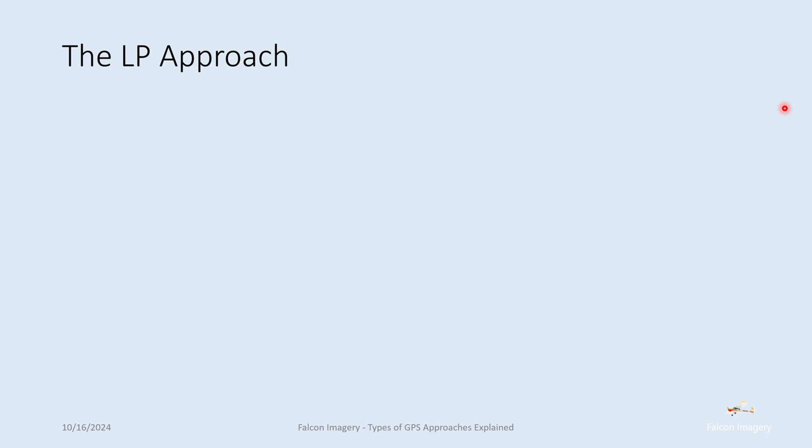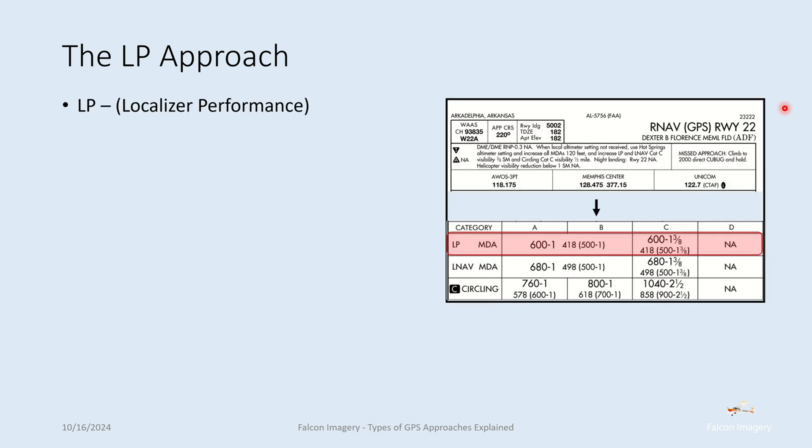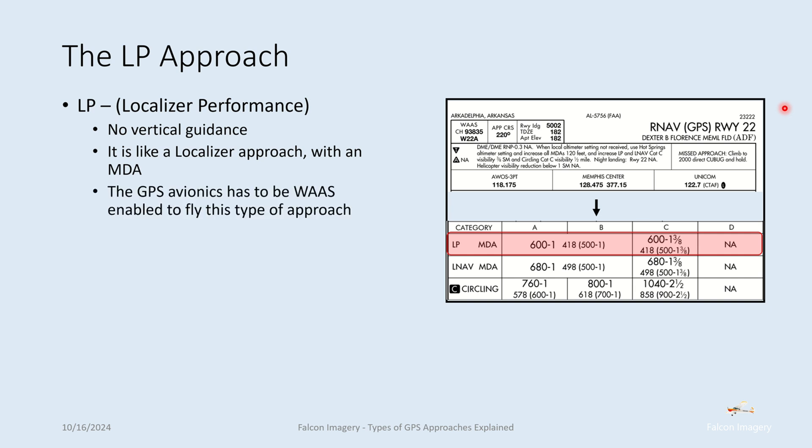Next, we have the LP approach — localizer performance-only. There's no vertical guidance. It's like a localizer approach but has an MDA, or minimum descent altitude, associated with it. The GPS avionics must be WAAS-enabled to fly this type of approach.